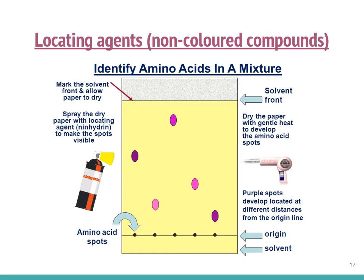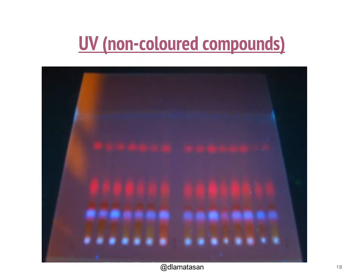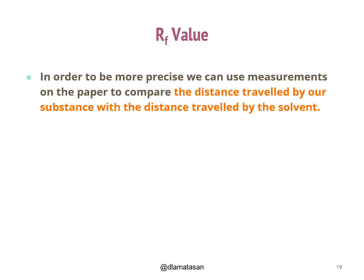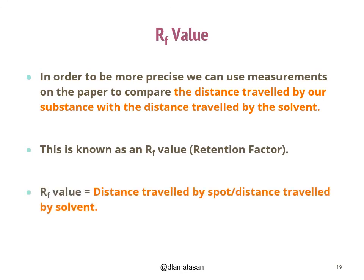Paper chromatography can also be used to separate and identify amino acids in a mixture. As amino acids are invisible to the naked eye, locating agents such as ninhydrin can be used to make the spots visible. Besides locating agents, we can also use UV light to identify invisible spots. To be more precise, we can use measurements on the paper to compare the distance traveled by the substance with the distance traveled by the solvent — this is known as the RF value, or retention factor. The RF value is calculated by dividing the distance traveled by the spot by the distance traveled by the solvent.